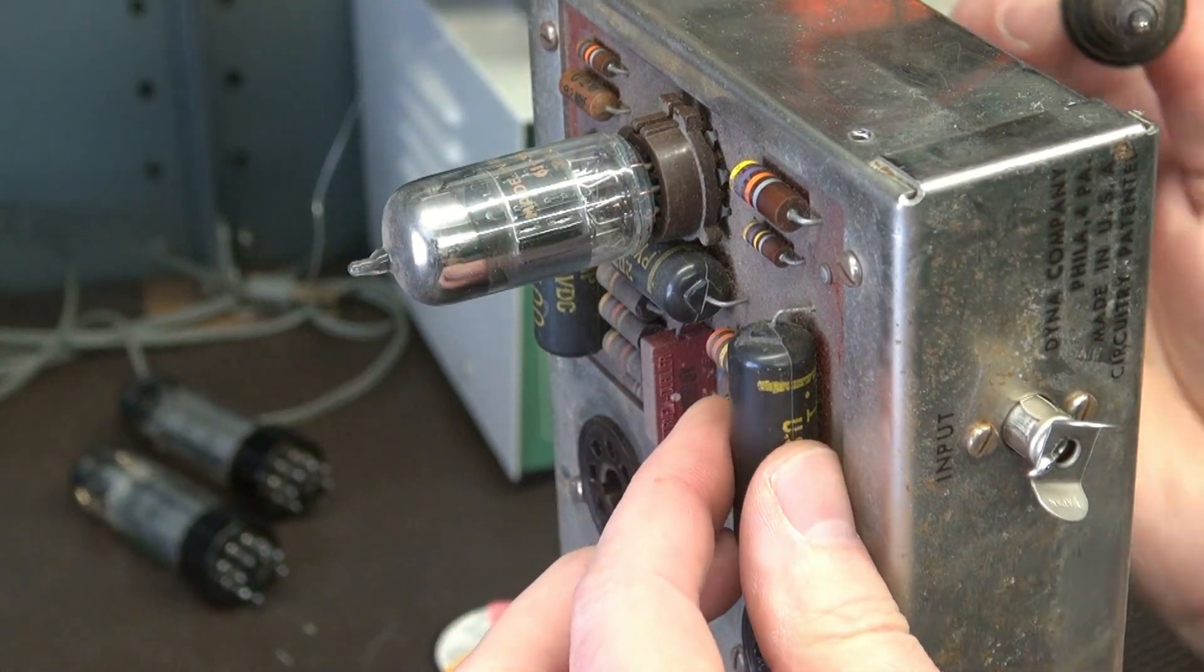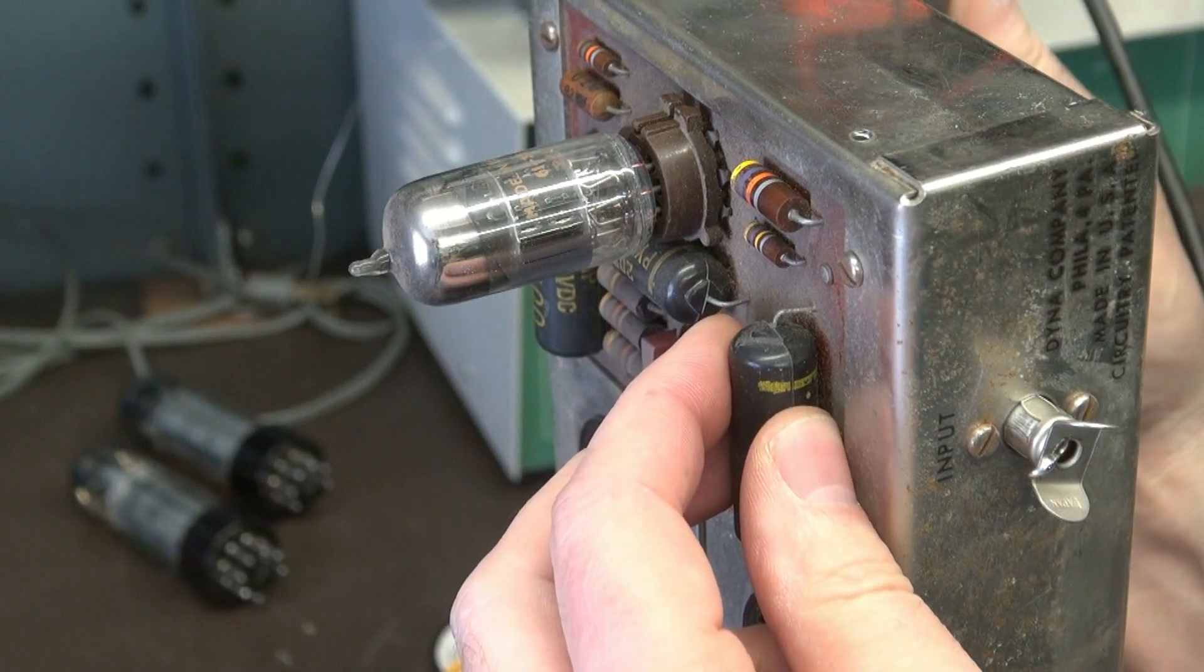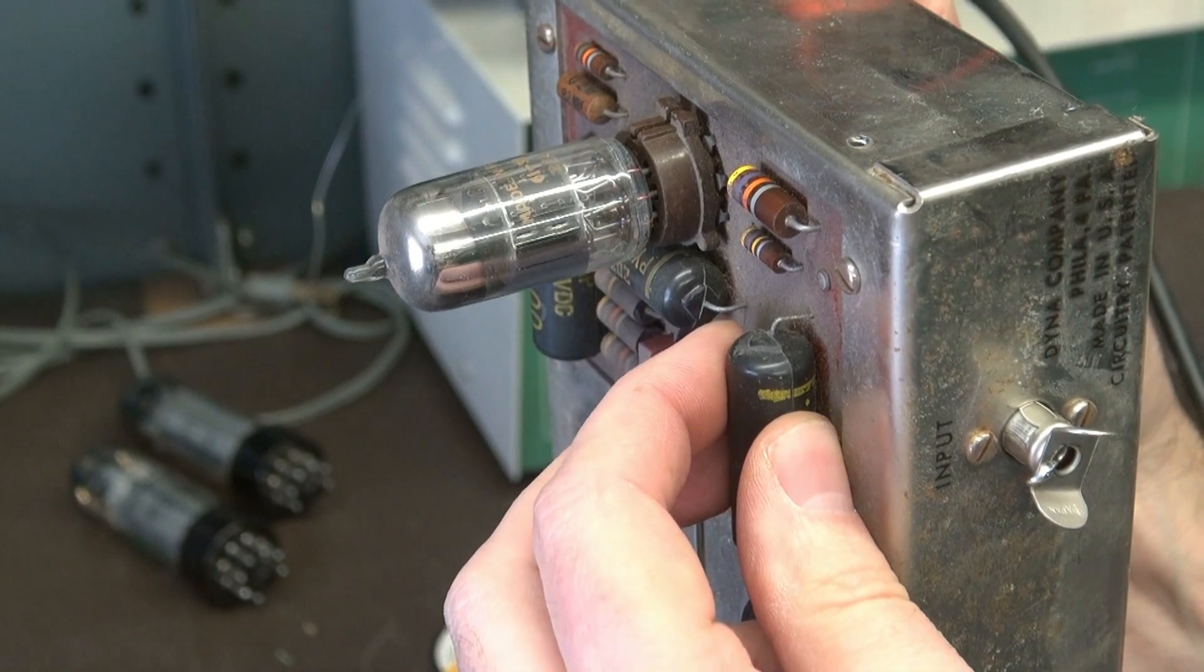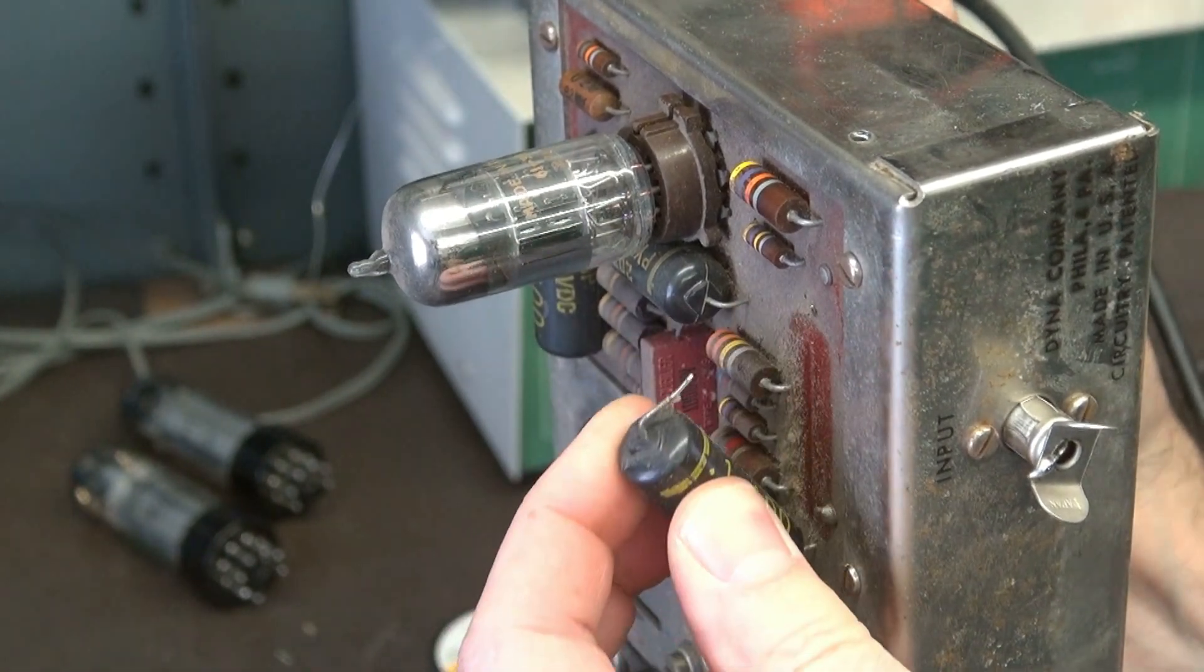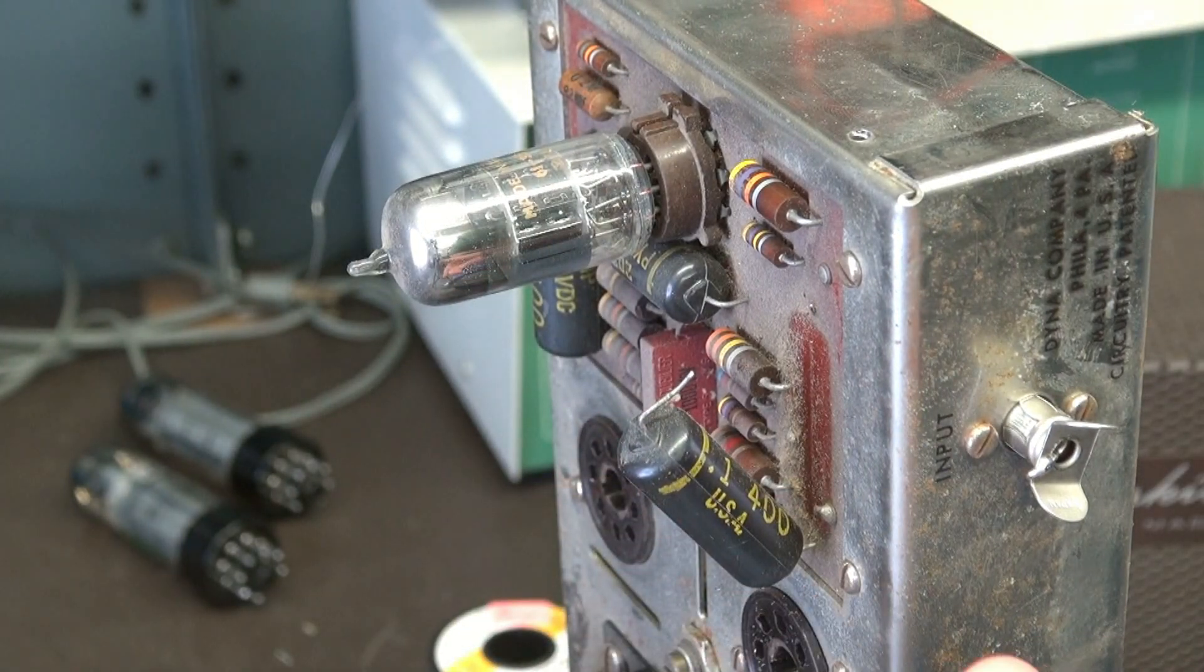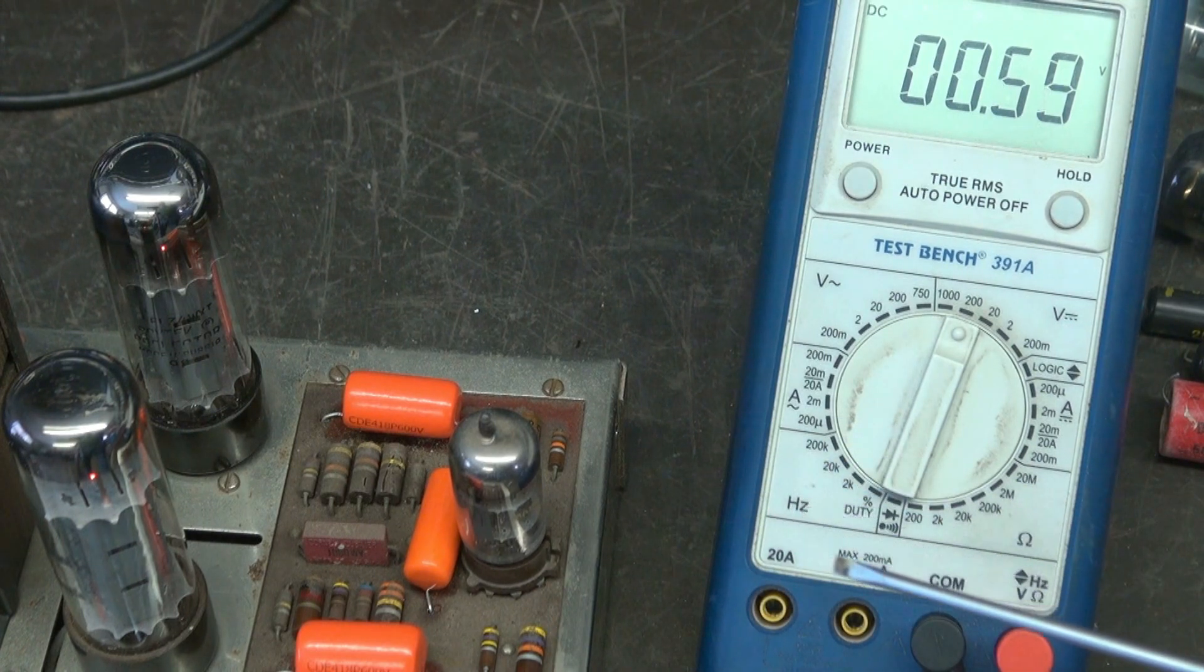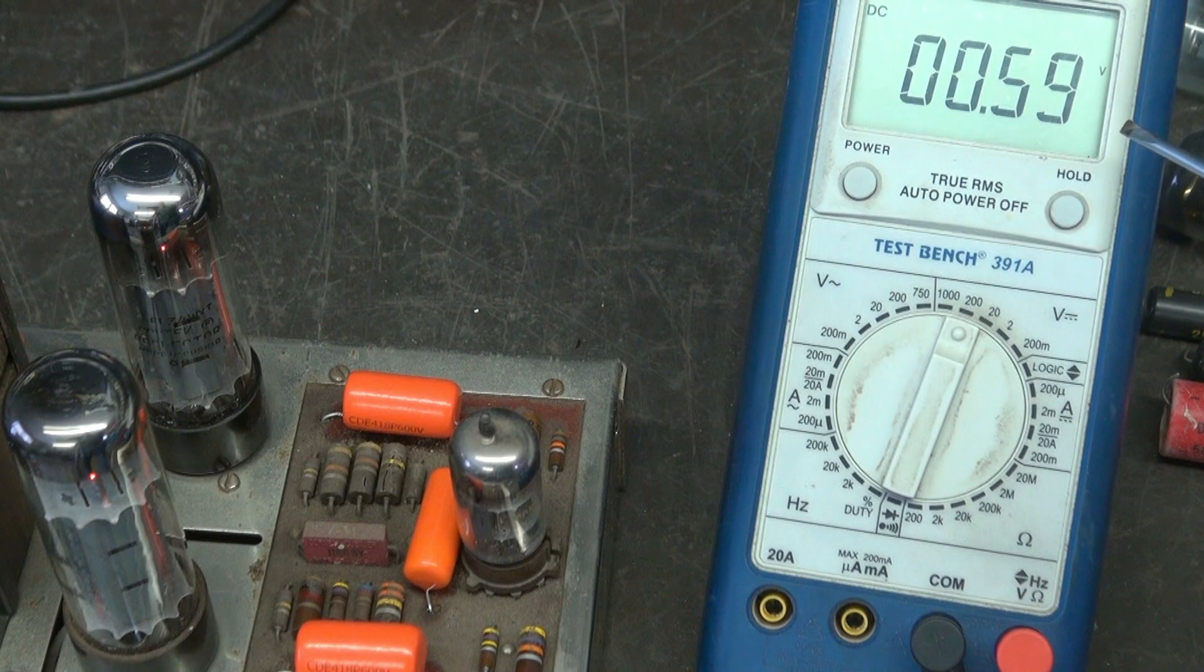So here's the first cap. You should be able to get underneath of here, find the leads coming in. Take another trusty soldering iron in there. Bam! There she goes. So let's lift these out and get the new ones in. Alright, so the new caps are installed. I've powered the amp back up.